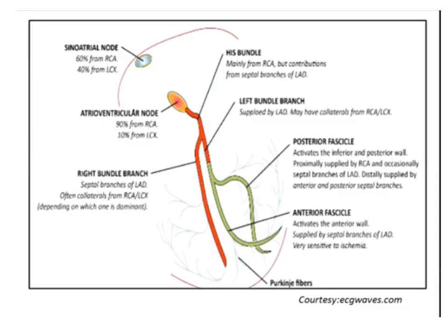This figure depicts blood supply to various parts of the heart. The SA node is supplied 60% from the right coronary artery and 40% from the left circumflex artery. The AV node is supplied 90% from the right coronary artery and 10% from the left circumflex artery. The right bundle branch is supplied by the septal branch of the LAD and receives collaterals from the RCA and LCX. The His bundle is supplied mainly by the right coronary artery with contribution from the septal branches of the LAD. The left bundle branch is supplied by the LAD but may get collaterals from the RCA and LCX.